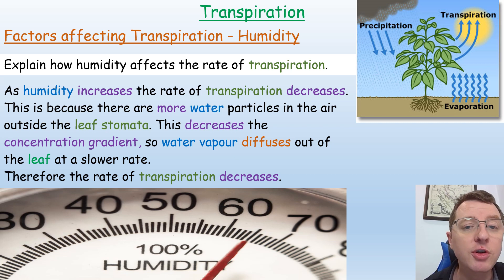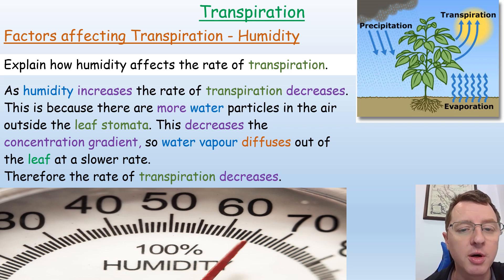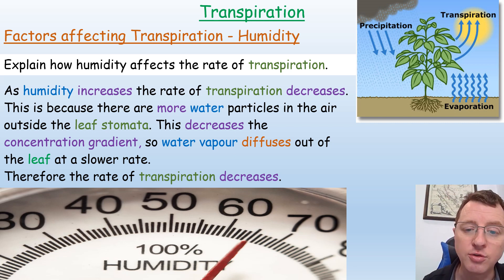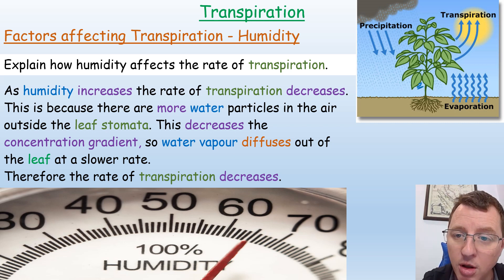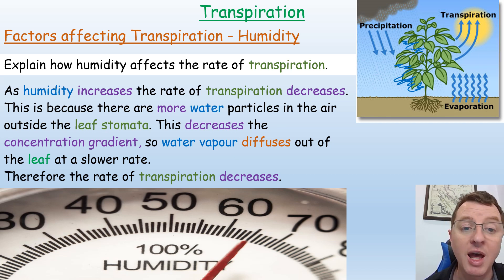How would humidity affect the rate of transpiration? As humidity increases, the rate of transpiration decreases. This is because there are more water particles in the air outside the leaf's stomata, which decreases the concentration gradient, so water vapor diffuses out of the leaf at a slower rate and the rate of transpiration decreases. Think of large layers of moisture and water particles surrounding each leaf, decreasing the concentration gradient and therefore decreasing the rate of diffusion and transpiration.